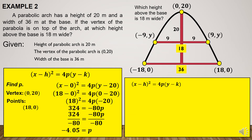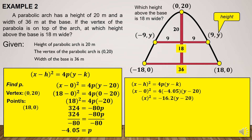Going back to the standard form equation, we substitute the values of h, p, and k. We obtain x squared is equal to negative 16.2 times (y minus 20). Since we are looking for the value of y, which is the height, and the value of x is already given as 9, we substitute: 9 squared equals negative 16.2 times y plus 324. The positive 324 comes from distributing negative 16.2 to (y minus 20), where negative 16.2 times negative 20 gives positive 324.